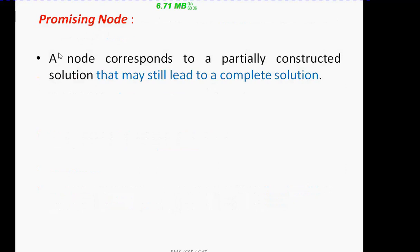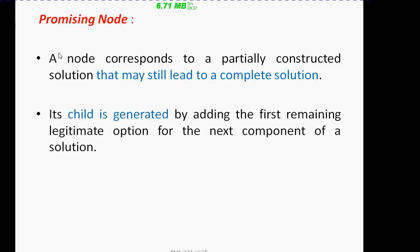Based on their outcome, nodes can be categorized as promising nodes or non-promising nodes. A promising node is a node which corresponds to a partially constructed solution and still leads towards the complete solution. Once we find a promising node, to move towards the solution we need to generate a child by adding the first element from the remaining options. The process continues by checking whether this child is a promising node or not, and if so, we generate the next child.